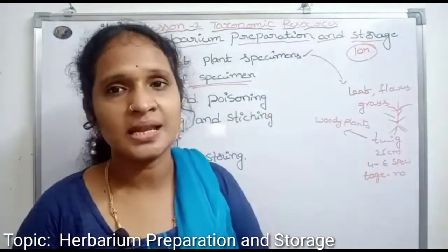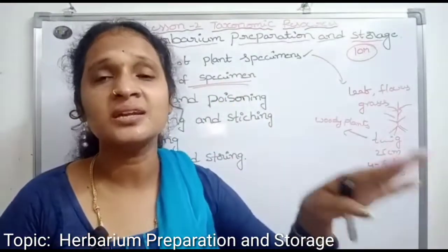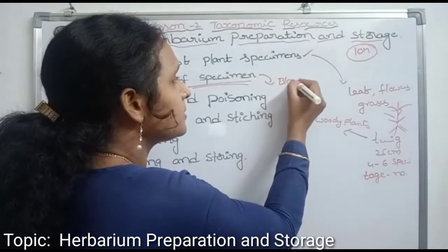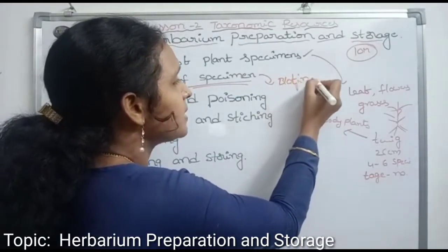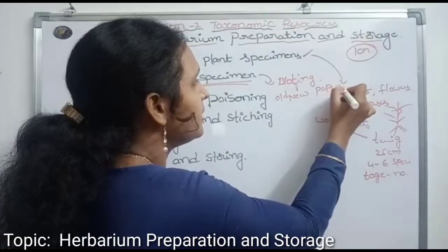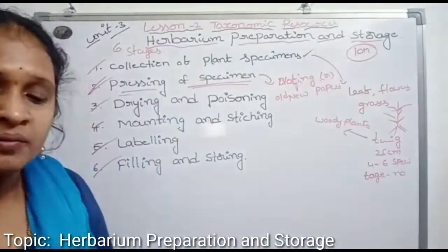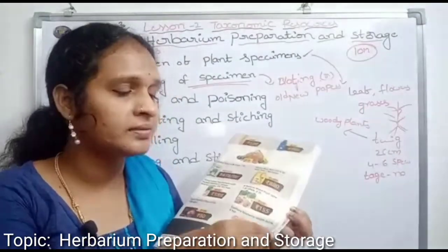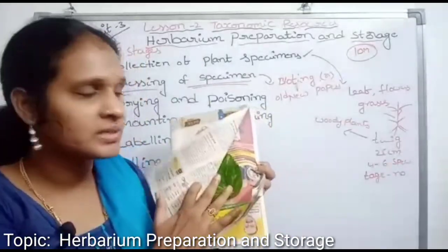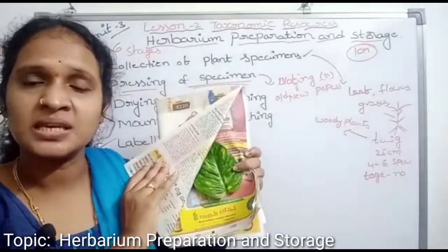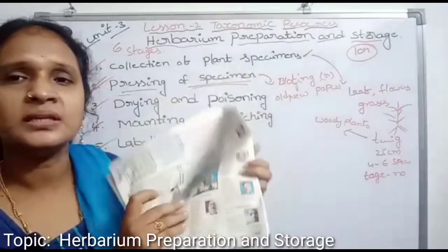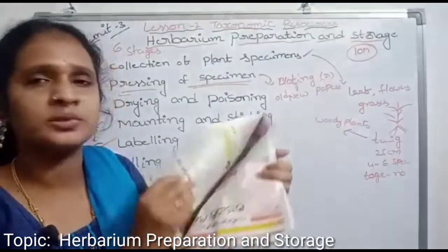The second step is pressing of the specimens. Collected specimens are placed between newspapers and blotting papers for pressing. We use old newspapers and blotting papers as pressing sheets.